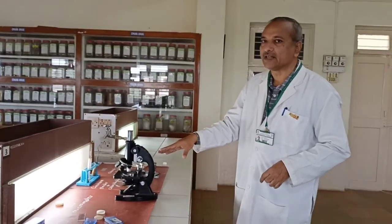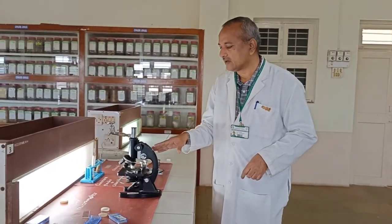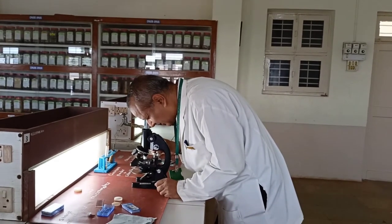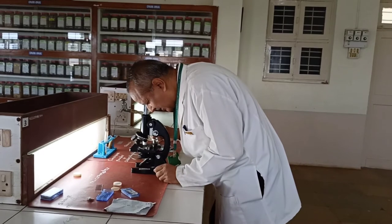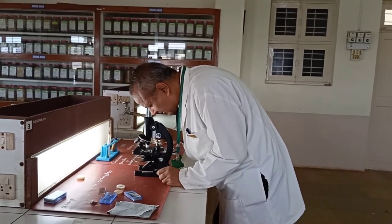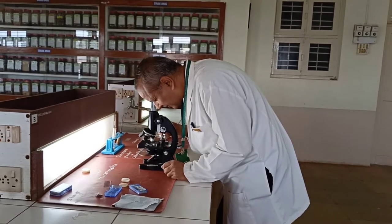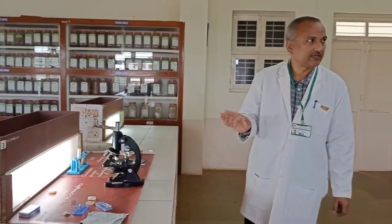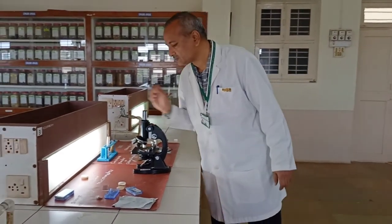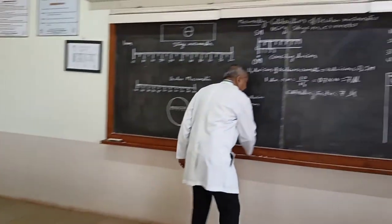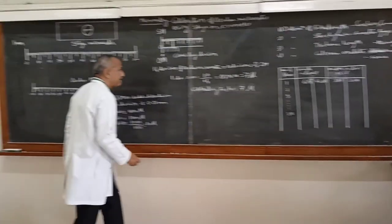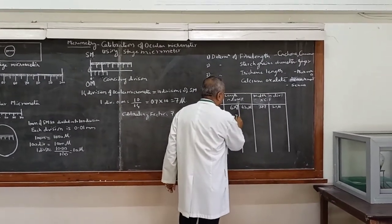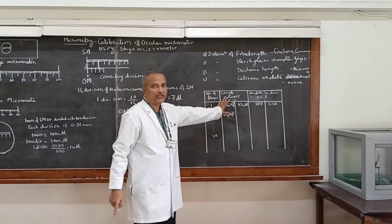For fiber length determination, we have focused on the cinchona bark powder where the bast fibers are stained. The fiber is measuring around 44 divisions of the ocular micrometer. Multiplying 44 divisions by the calibration factor (L/D value of 7) gives the actual length of the fibers in microns.